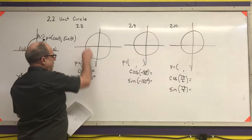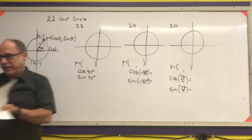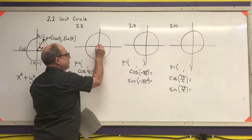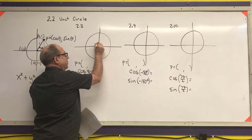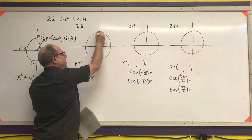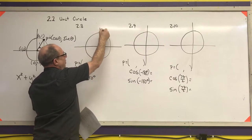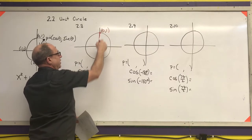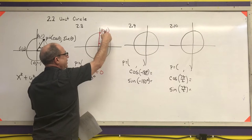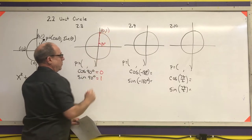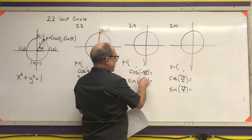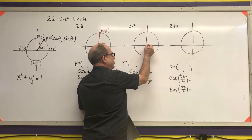Three examples: Example 2.8 asks for the cosine of 90 degrees. First I draw the angle at 90 degrees and label the coordinates of that point, which are (0, 1). So the cosine of 90 degrees is 0 and the sine of 90 degrees is 1.